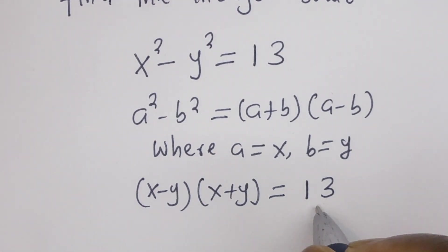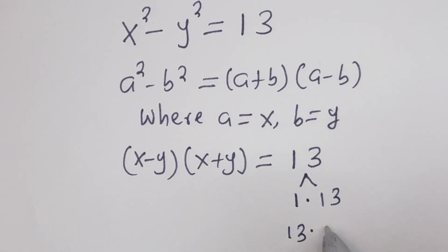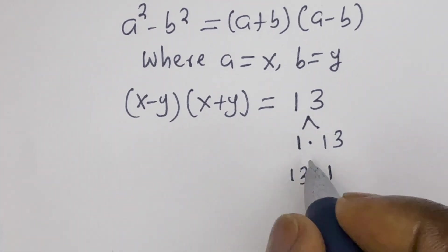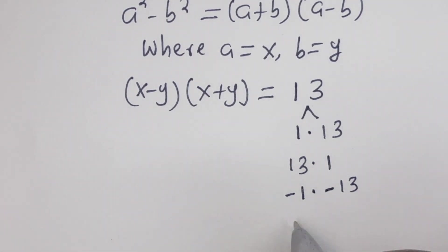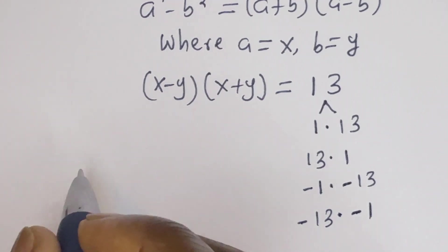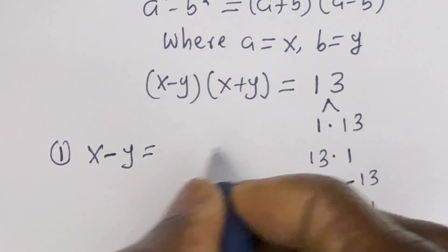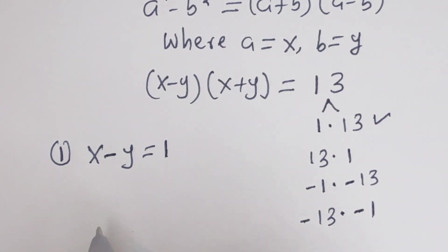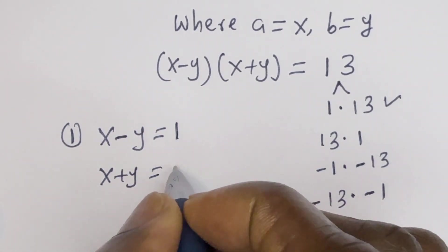Now, 13 can be written as 1 multiplied by 13, or 13 multiplied by 1. Because we want to find the integer solutions, 13 is also minus 1 multiplied by minus 13, and minus 13 multiplied by minus 1. So the first case is x minus y equals 1, and x plus y equals 13.